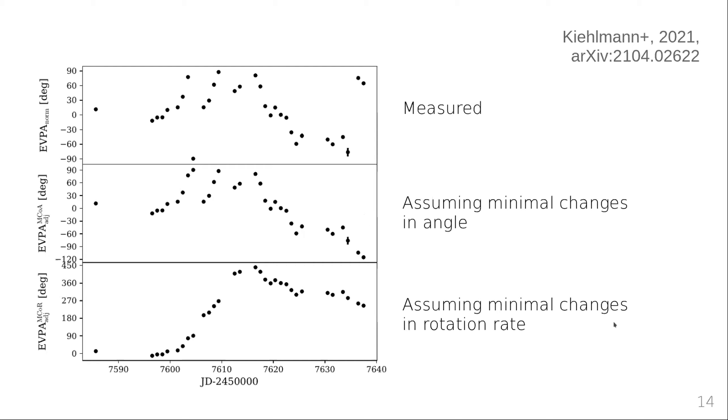However, if we assume that the EVPA rate, so the speed of the rotation changes minimally between measurements, we end up with this long, smooth, continuous rotation and then the rest here does the same thing as before. Now the problem is we have no clue what's happening intrinsically in this source. We can't tell if this reflects reality or if this reflects reality. And of course, the issue happens around those parts here where we have insufficient sampling to tell if it went down again or if it continued to go up.